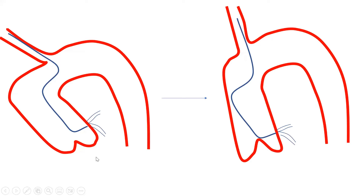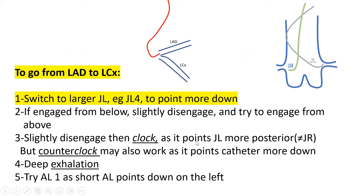To go from LAD to circumflex, it is the same in reverse: get a larger catheter, try engaging from above rather than below, and use deep exhalation instead of inspiration. Ask the patient to exhale and hold their breath after exhalation, then disengage and re-engage while they're holding their breath in exhalation. Amplax left 1 can also be used — the smaller Amplax left points the tip downward, facilitating circumflex engagement.